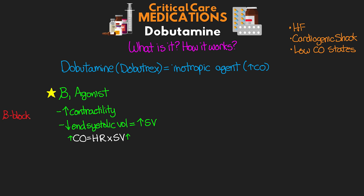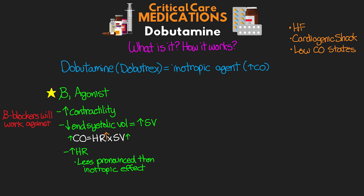One thing to keep in mind is that beta blockers are going to work against the effects of dobutamine. Dobutamine can also impact our patient's heart rate through this beta-1 activation, although the elevation in heart rate is less pronounced than its inotropic effect. This increase in heart rate can also contribute to the increase in cardiac output from the equation we just talked about.